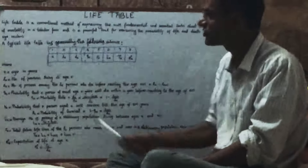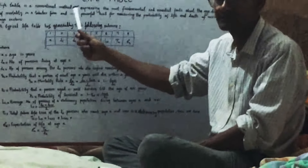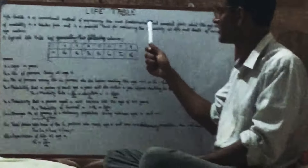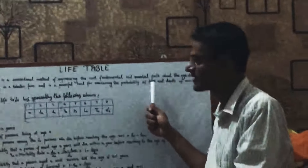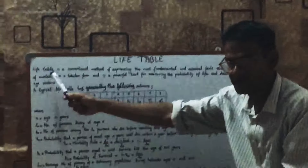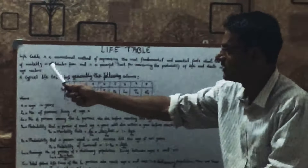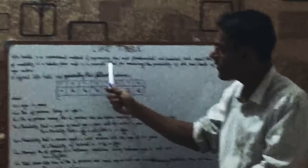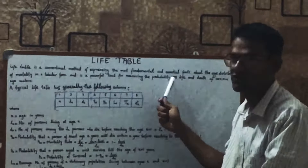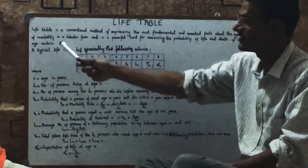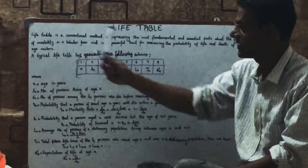Life table is a conventional method of expressing the most fundamental and essential facts about the age distribution of mortality in a table form. It is a powerful tool for measuring the probability of life and death for various age sectors.